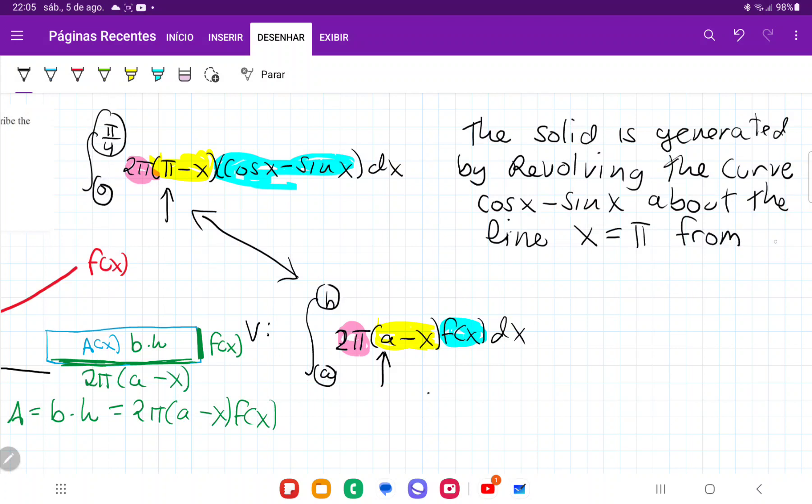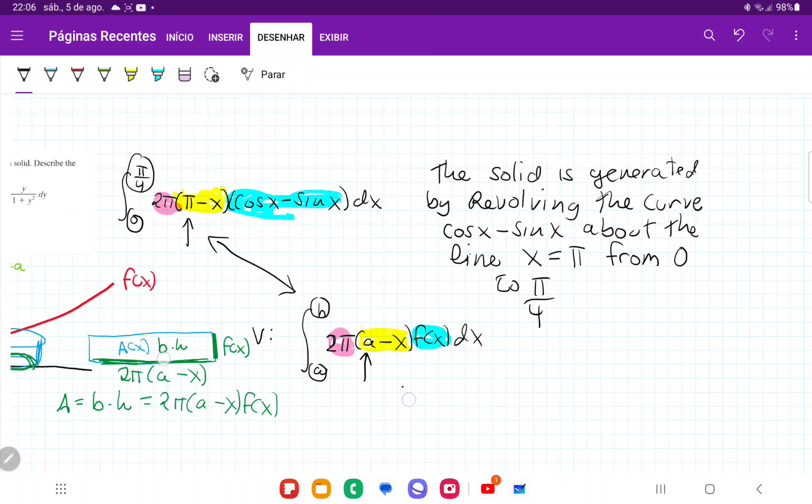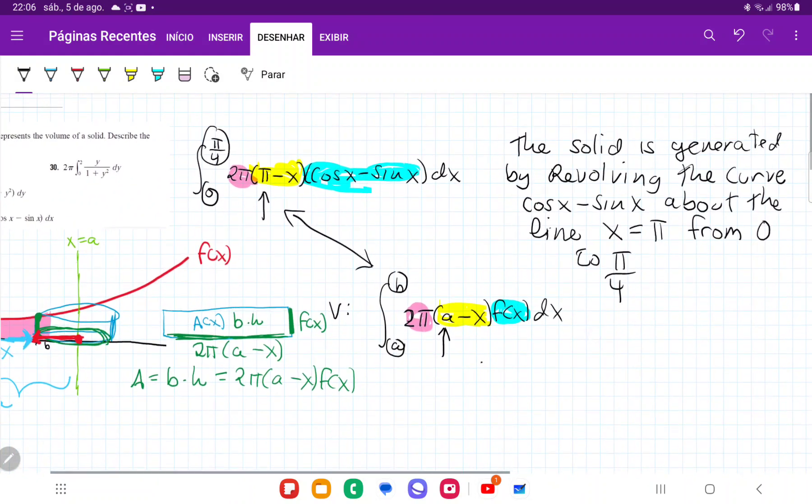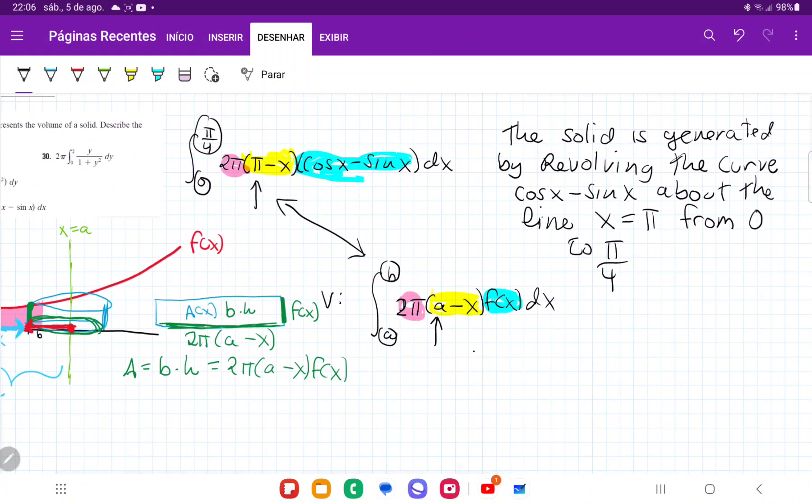And then that goes from a to b. So it goes from 0 to π over 4. From 0 to π over 4. And that's what we get. This is the translation of that interval.